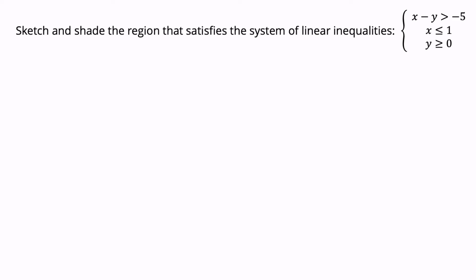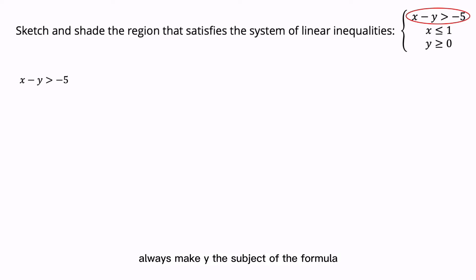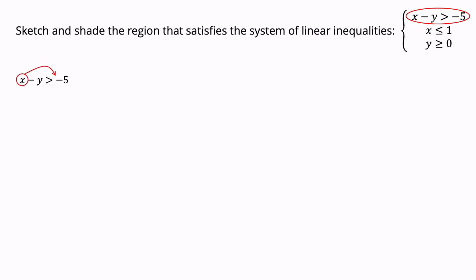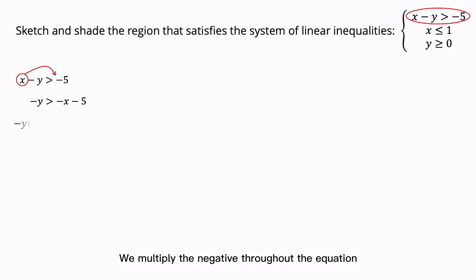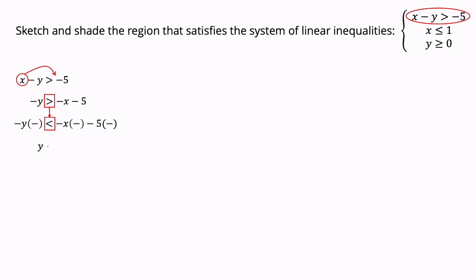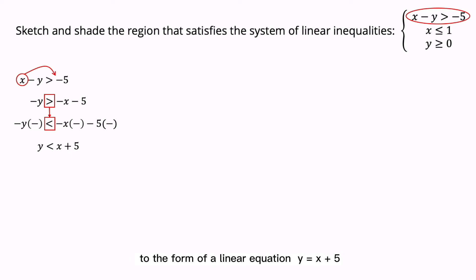Next, we try to sketch and shade the region that satisfies the system of linear inequalities. Look at the linear inequality X minus Y greater than minus 5. We arrange the linear inequality — always make Y the subject of the formula. Transpose the variable X to the right-hand side: minus Y greater than minus X minus 5. Change the coefficient of Y to a positive value by multiplying the negative throughout the equation. The sign of greater than will change to less than. We have Y less than X plus 5. Convert this to the linear equation Y equals to X plus 5.